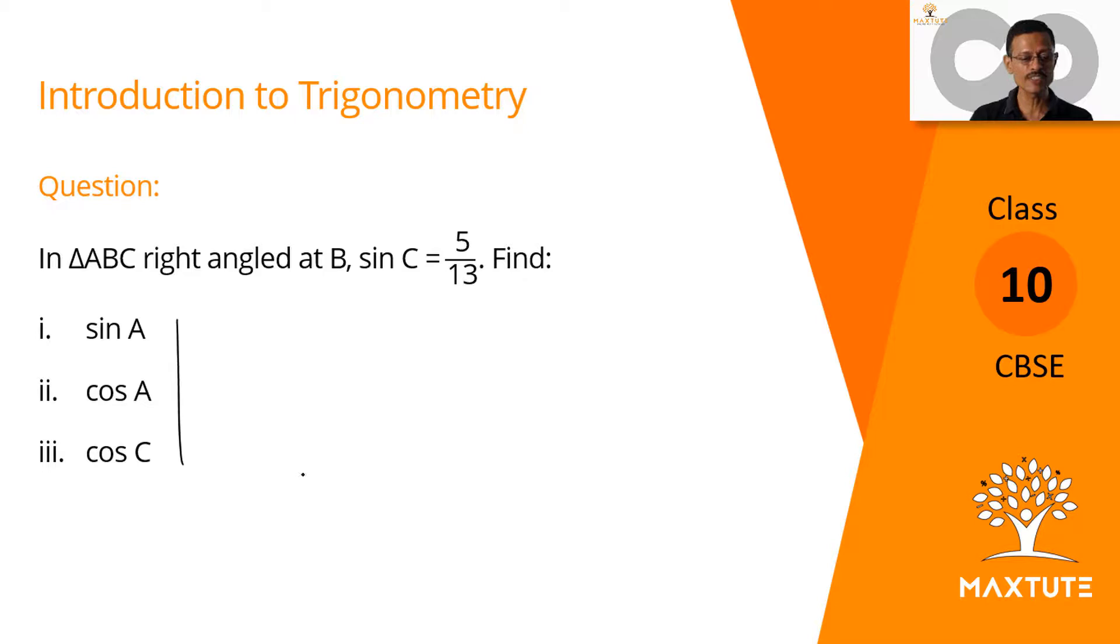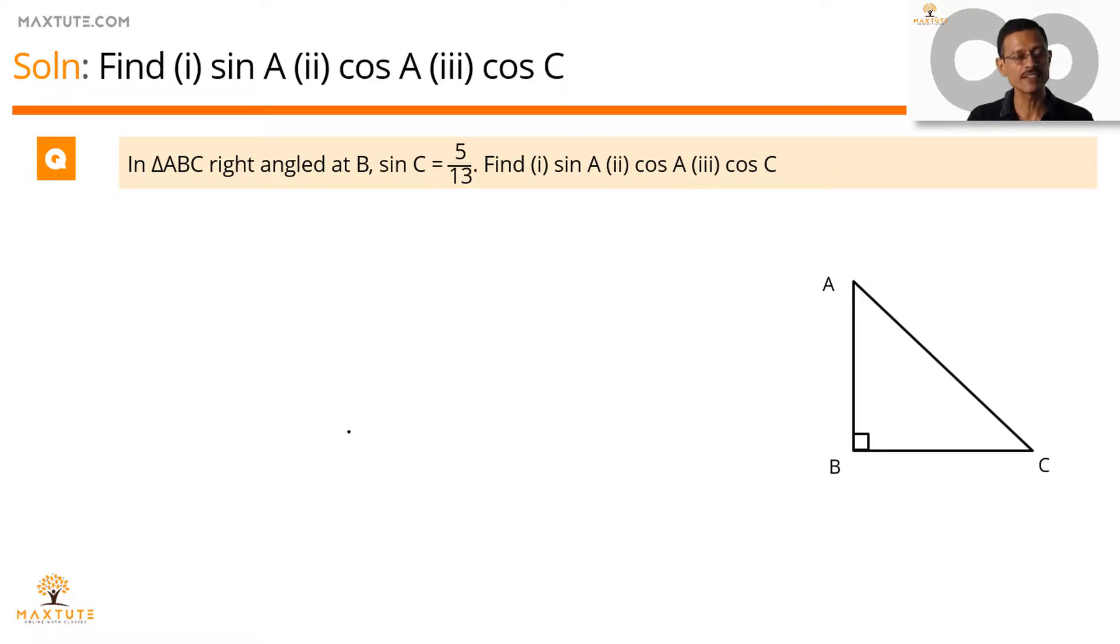Let's set about doing the first part. Solve the question. Find out these three trigonometric ratios. What is given to us? The triangle is right angled at B and they mentioned that sin C is equal to 5 by 13.